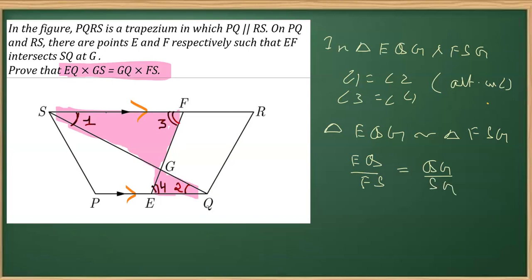Now from here, if I do cross multiplication, it's going to be EQ multiplied by SG or GS is equal to GQ or QG into FS. This is what we needed to prove, and that's what we proved.